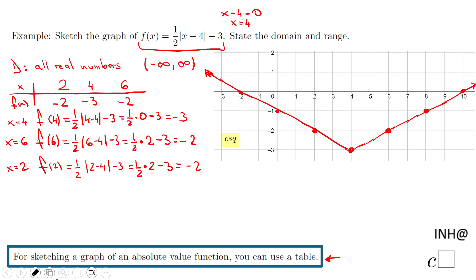Let's go to the next part, which is the range. The range, remember, means what kind of y you can get out. If you notice, this is the lowest possible value, which is negative 3. This is the lowest possible y value we can get.